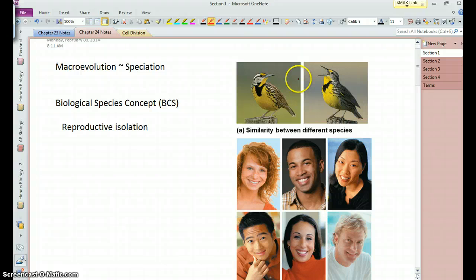these two species of meadowlark, one is the eastern and one is the western, they sort of look similar to each other, but yet they do not breed with each other, so they are reproductively isolated.